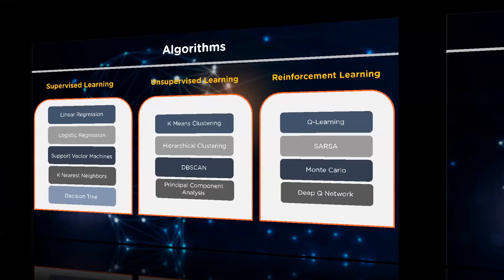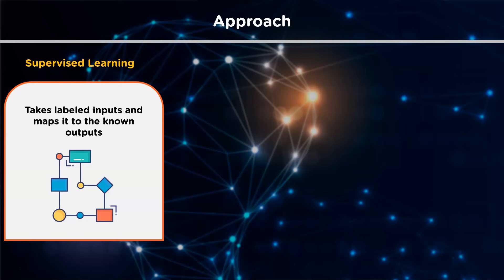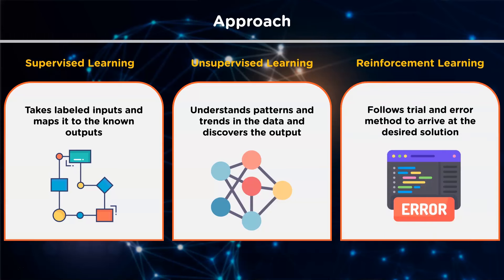In terms of approach: supervised learning takes labeled inputs and maps them to known outputs, meaning you already know the target variable. Unsupervised learning finds patterns and understands trends in the data to discover the output — the model tries to label the data based on features of the input. Reinforcement learning follows a trial-and-error method to get the desired solution; after accomplishing a task, the agent receives a reward.